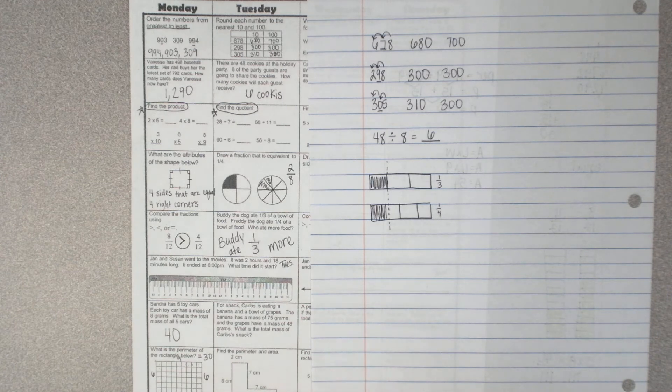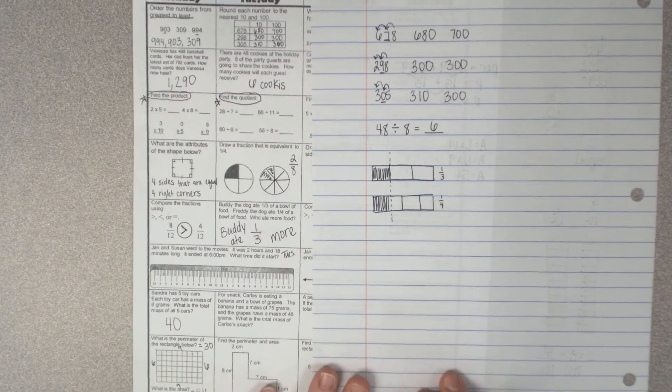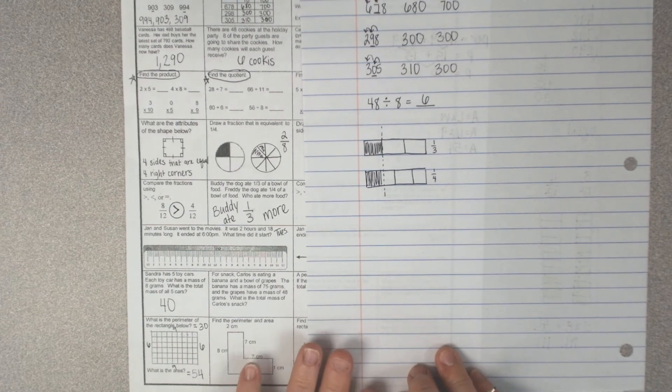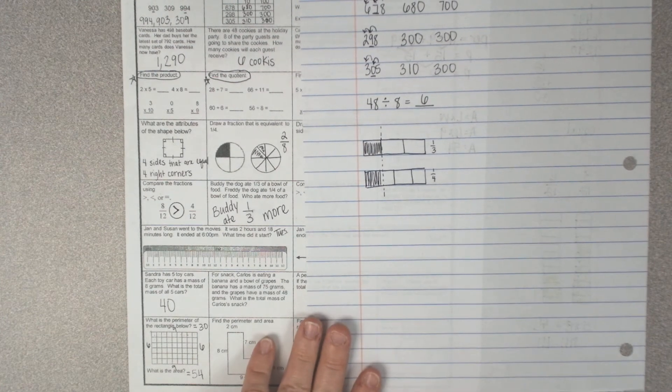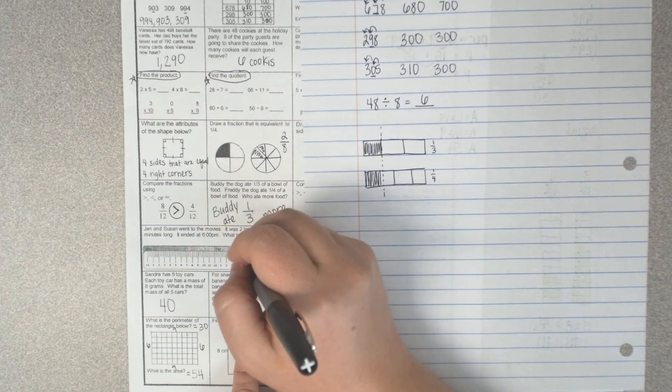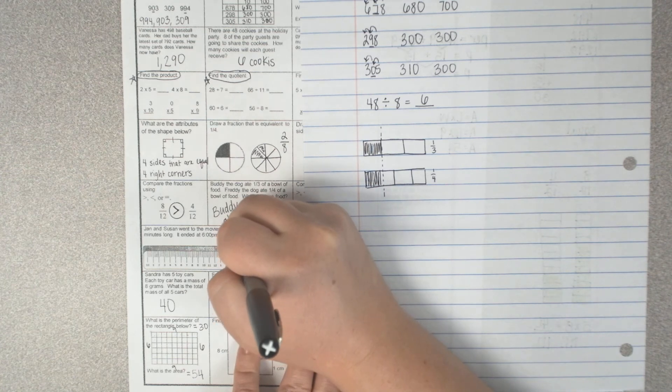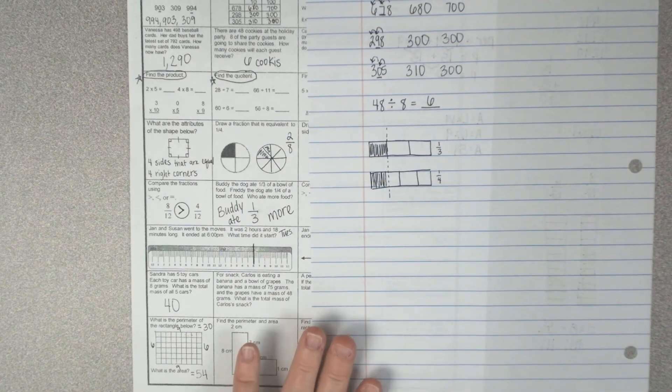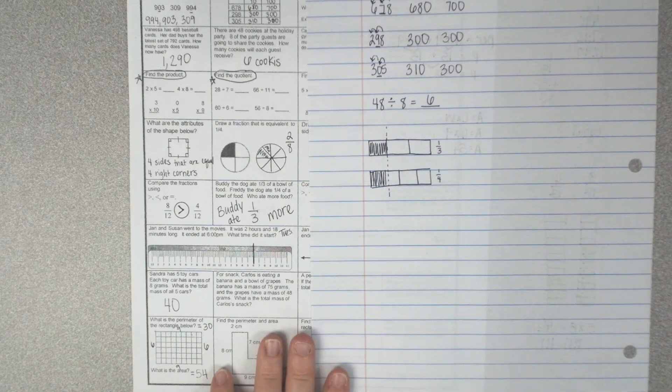This next one says Jan and Susan went to the movies. It was two hours and 18 minutes long. It ended at 6 p.m. What time did it start? If it ends at 6 p.m., here's when it ends. We want to know what time did it start.